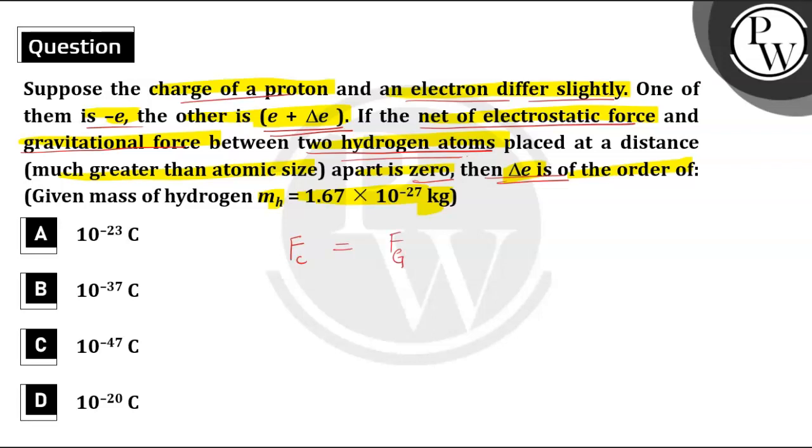So, electrostatic force or Coulomb force, that is 1 by 4 pi epsilon naught q1 into q2, and the charge of hydrogen atoms is delta E whole square divided by the distance square. Okay.